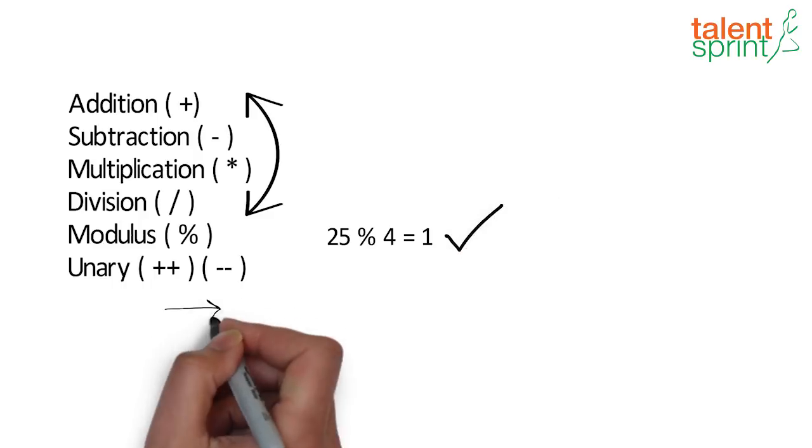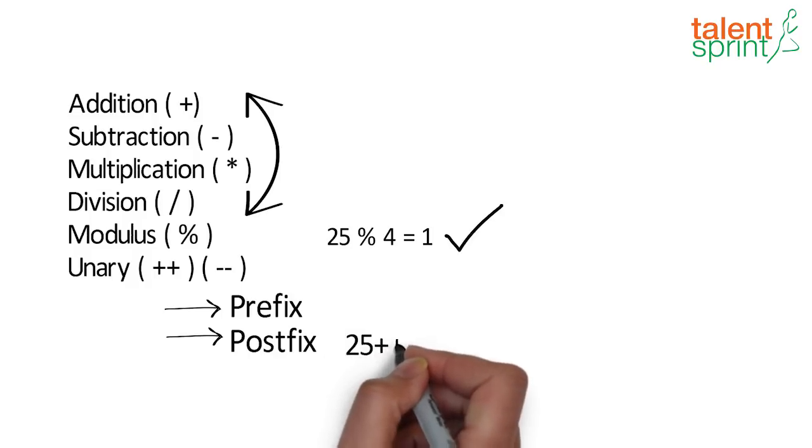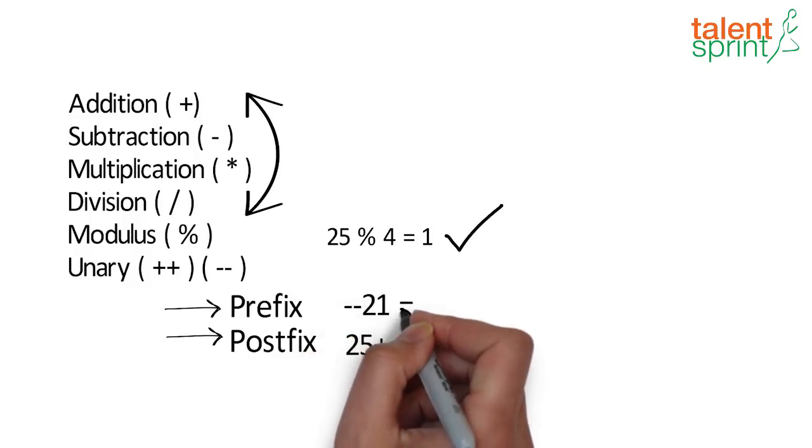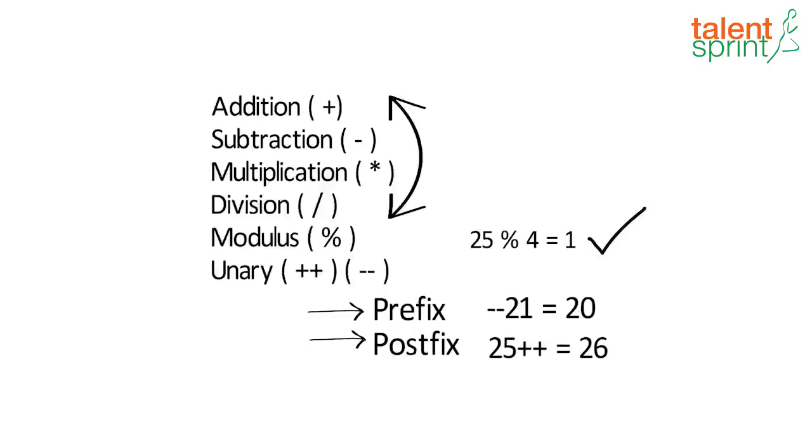There are two unary operators prefix and postfix for each addition and subtraction. These simply increment and decrement the value by 1. So for example 25++ will result in 26 or --21 will result in 20.